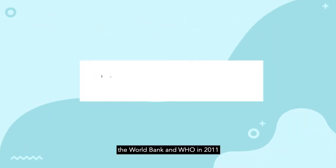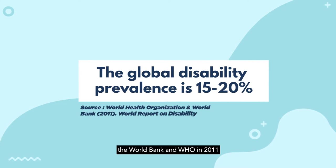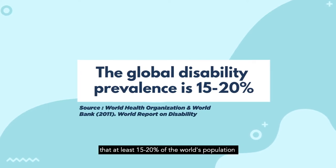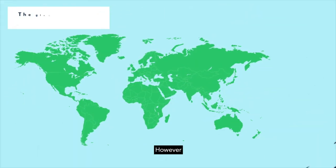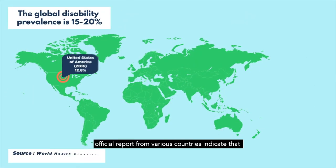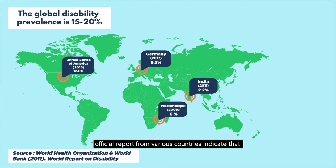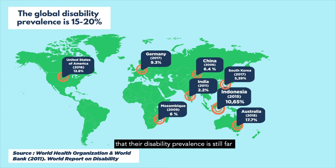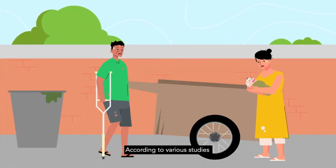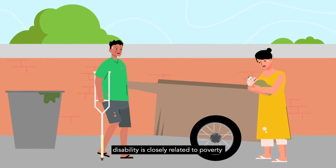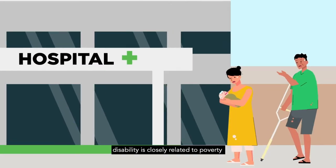The World Bank and WHO in 2011 state that at least 15 to 20% of the world's population are people living with disabilities. However, official reports from various countries indicate that their disability prevalence is still far below this number. According to various studies, disability is closely related to poverty.